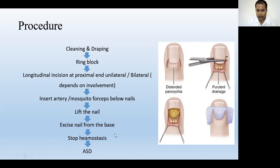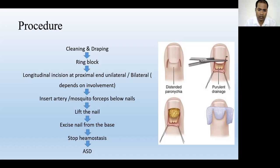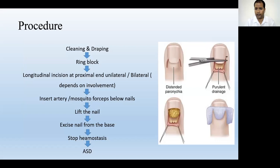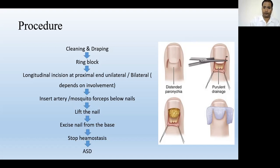If you want to remove only half the nail, lift half and excise it with a blade. Then remove whatever pus and unhealthy dead tissue is there, pour antibiotic solution, clean the area, and stop any bleeding by pressing or cauterization to achieve hemostasis. Then do antiseptic dressing and apply a stump bandage. Cleaning and dressing should be repeated after three to five days. Along with the surgical procedure, these patients usually require antibiotics and analgesics for three to five days to manage pain and avoid secondary infections.